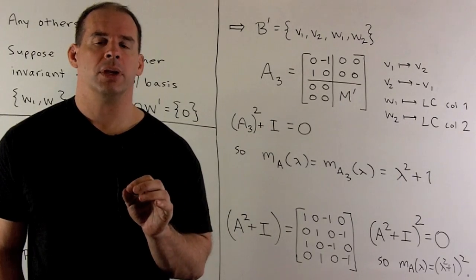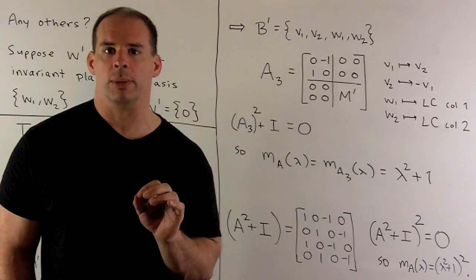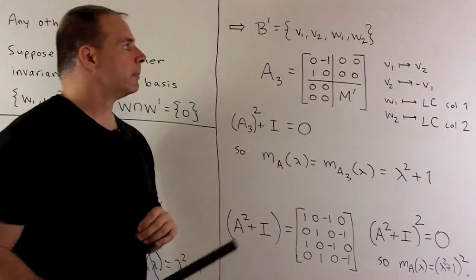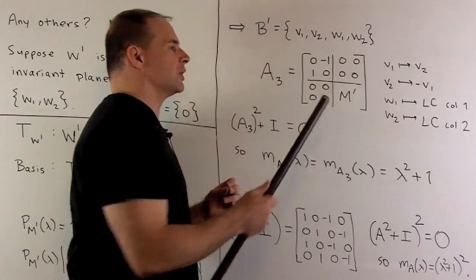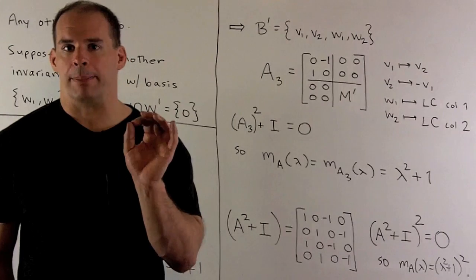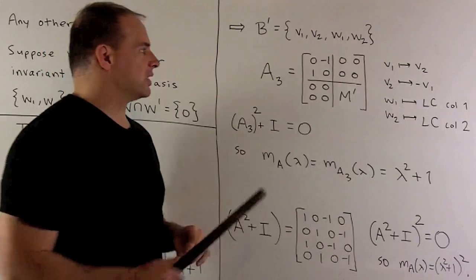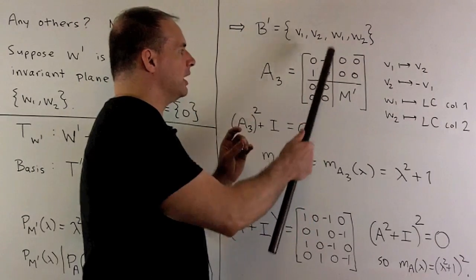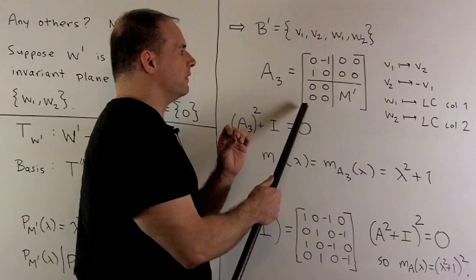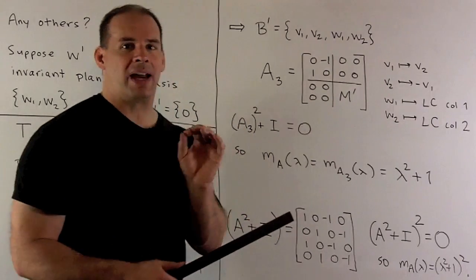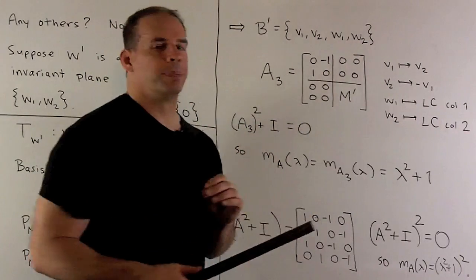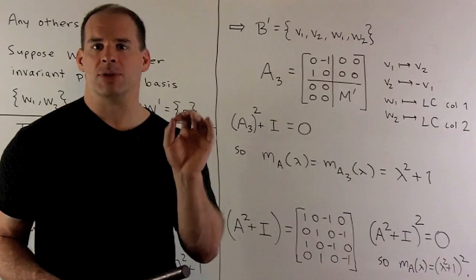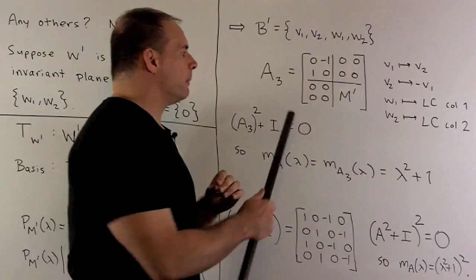To make use of M′, we'll get a contradiction when we compute the minimal polynomial of A. We choose the following basis for R⁴: V₁, V₂, W₁, W₂. With respect to that basis, T is represented by the matrix A₃. Remember the way we interpret this? The columns tell us where each basis vector goes. V₁ goes to V₂, V₂ goes to minus V₁, W₁ and W₂ are going to go to linear combinations of W₁ and W₂, determined by the columns of M′. So, that's how we get our matrix here.